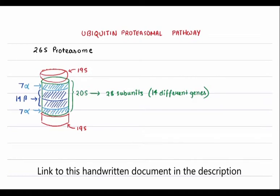If we imagine it as a 3D model, the subunits would also be at the back, and the same goes for the beta subunits — so seven alpha and seven beta per ring. This is the overall structure of the 26S proteasome.